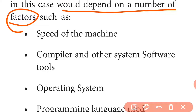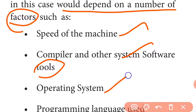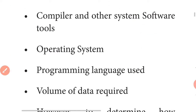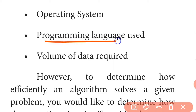What are the methods for determining the efficiency of an algorithm? The first method is the speed of the machine. The second is the compiler and other system software. The third is the operating system.